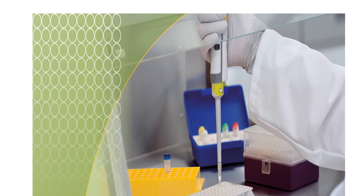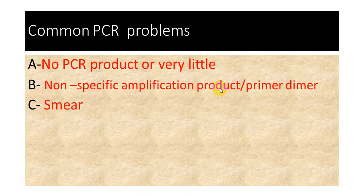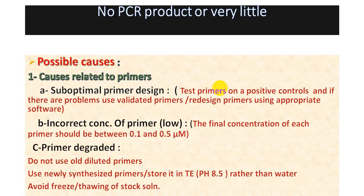In this video I will talk about a very important issue related to PCR problems and analysis. Please subscribe to my channel. Let's start. Common PCR problems: number one, no PCR product or no band — you do a PCR reaction and gel electrophoresis, and when you analyze the result you cannot find any band. Number two, non-specific amplification. Number three, smear.